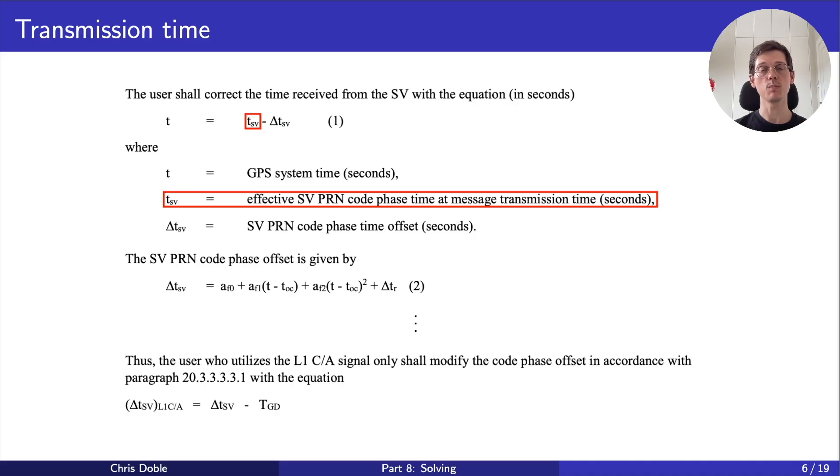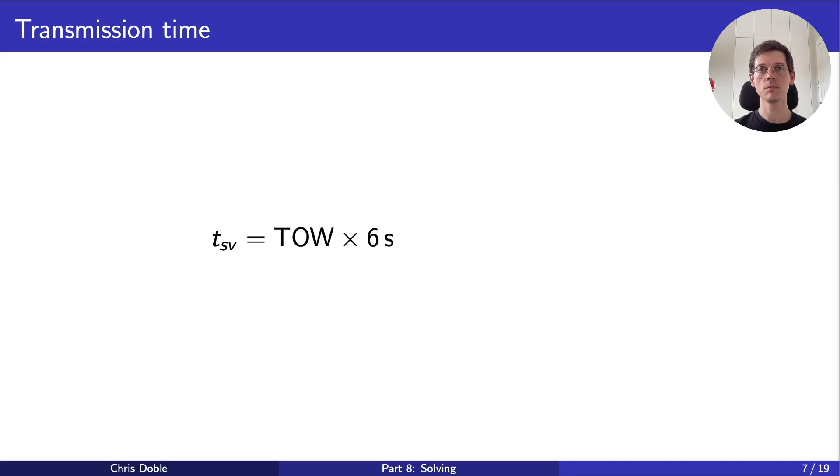Well, remember the time of week count parameter that we spoke about in the previous video? If we take it from the previous subframe and multiply it by 6 seconds, we get the time at which the current subframe began transmission. And that's a starting point for our estimate. And remember how the tracking stage counts the number of PRN codes it's observed? If we add one millisecond, which is the duration of a PRN code, for each PRN code we've seen in the current subframe, we get an estimate of when the most recent PRN code finished transmission, which is exactly what we're looking for. It's also important to note that this time is expressed as a number of seconds since the start of the current GPS week. We'll need to make sure that the reception time is expressed in the same way.